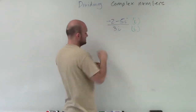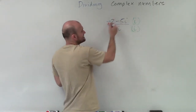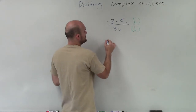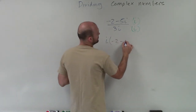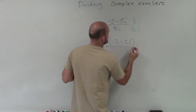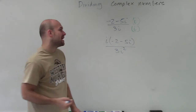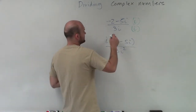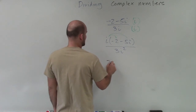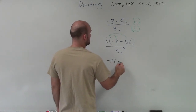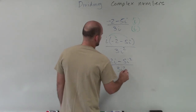So now we just need to multiply this. When we have i times a binomial, we need to make sure we rewrite that with our parentheses. That's i times negative 2 minus 5i, divided by 3i squared. Now I can apply my distributive property, and I'll have negative 2i minus 5i squared, all over 3i squared.